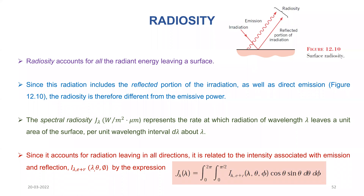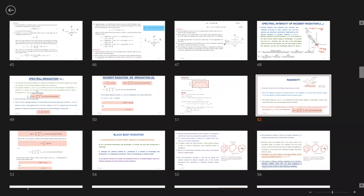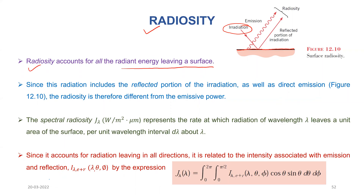We are going to discuss about radiosity, which is a very important property. Radiosity accounts for all radiant energy leaving a surface. As shown here, irradiation is the energy falling on the surface, and the energy leaving the surface is in the form of emission and the reflected portion of the irradiation.